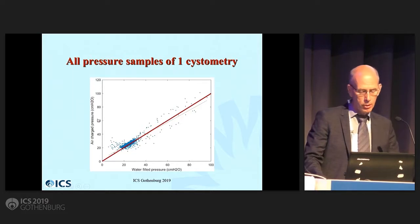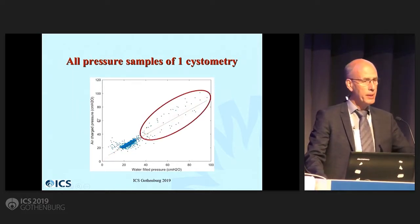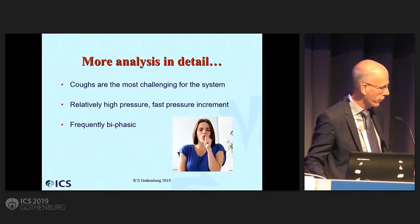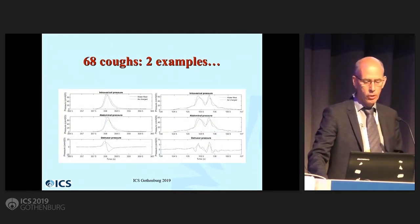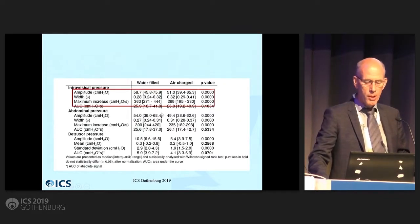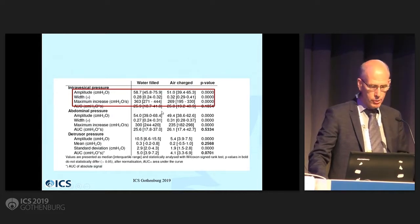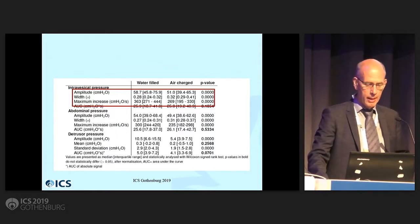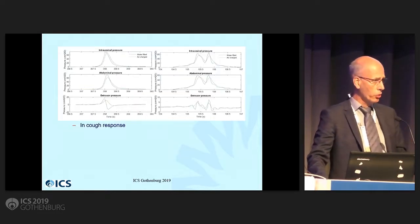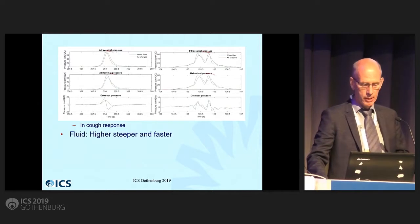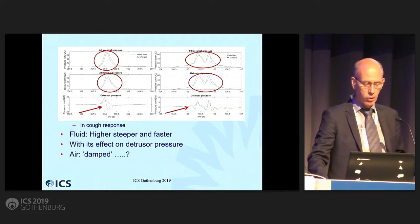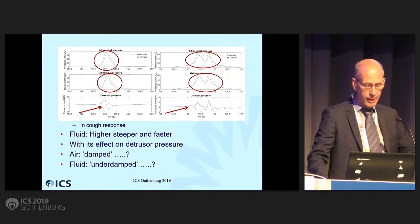Although there is a very high correlation, the high pressures are the most challenging — those are the coughs. So we did specific analysis of the coughs. Here are two coughs out of 68. You see the similarities, but we saw significant differences in the amplitude and the width. However, the area under the curve is very similar, meaning the total amount of pressure measured is very similar. Fluid is slightly steeper and slightly faster in its effect on the detrusor factor. You could question whether air is damped or fluid is underdamped.